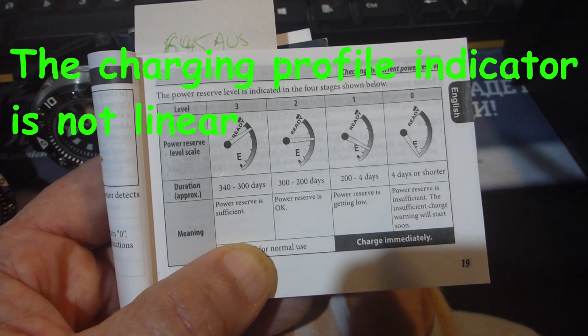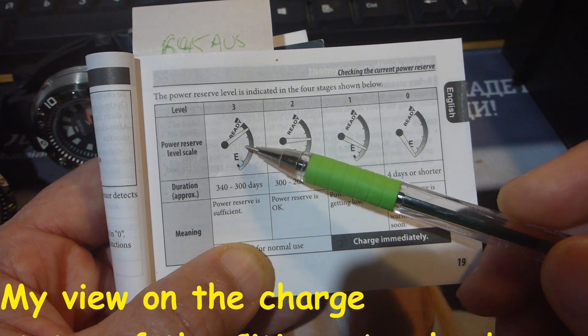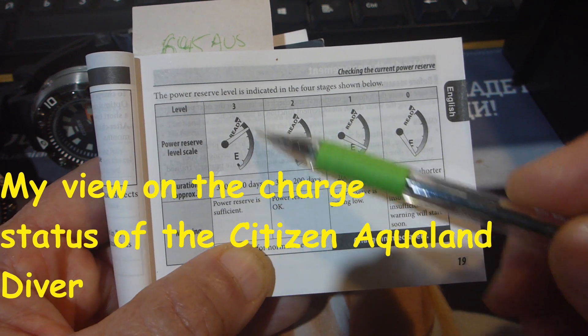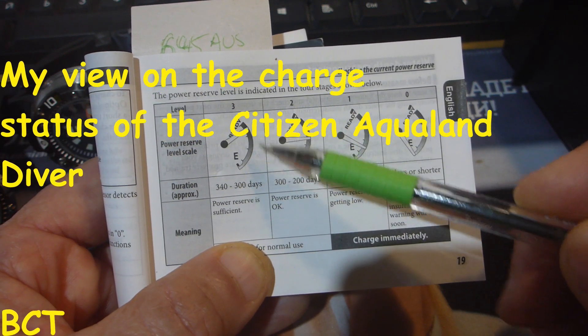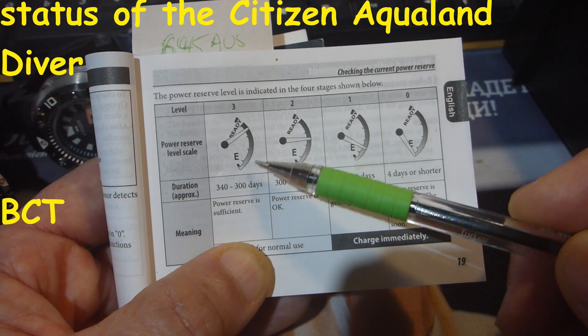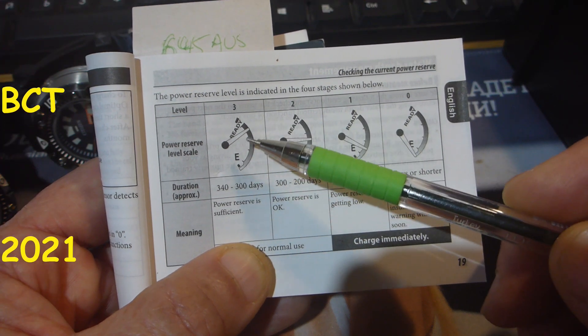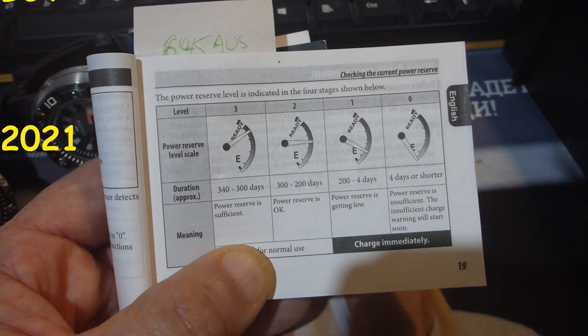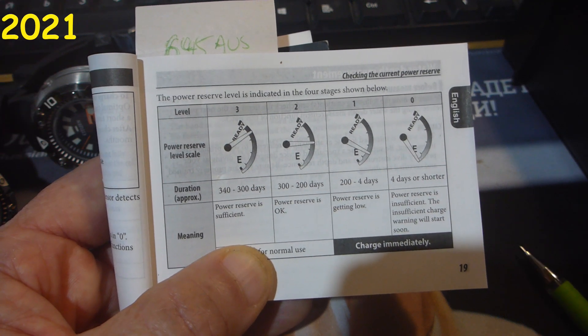For any Citizen Aqualand owners or any other watches that feature these things, because you have to remember the charging profile, it is not a linear charging profile for the types of batteries that are used in these watches. Okay, bush camping tools here, thanks for watching.